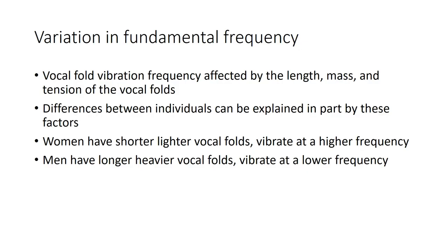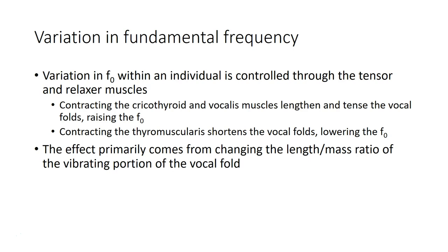Variation in fundamental frequency — the vibration rate of the vocal folds — is affected by the length, mass, and tension of the vocal folds. Women have shorter and lighter vocal folds, so they tend to vibrate at a higher fundamental frequency. Men have longer and heavier vocal folds and vibrate at a lower frequency. Small children have very small, light vocal folds and thus vibrate at a very high frequency. Within an individual, we can control fundamental frequency using tensor and relaxer muscles. Contracting the cricothyroid and vocalis muscles lengthens and tenses the vocal folds, raising frequency, while contracting the thyromuscularis shortens them, lowering frequency. This difference comes primarily from changing the ratio of length to mass of the vibrating part of the vocal folds.